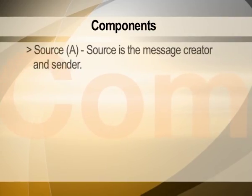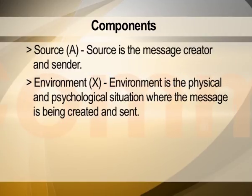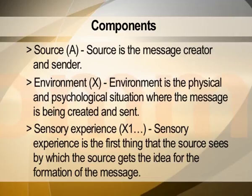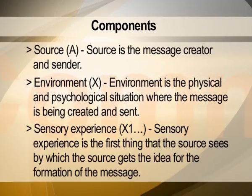Now that we know what each component is, for any communication to take place, there has got to be a source. A was the source — journalist A was the source to us, who is B. There has got to be an environment — that is Park Street, where the X events were happening. We must have a sensory experience: when the event was happening — when the ambulance was being stopped — journalist A sensed it, stood there and watched what was happening. There must be that sensory experience, and you must capture it in your mind, also in your camera perhaps.